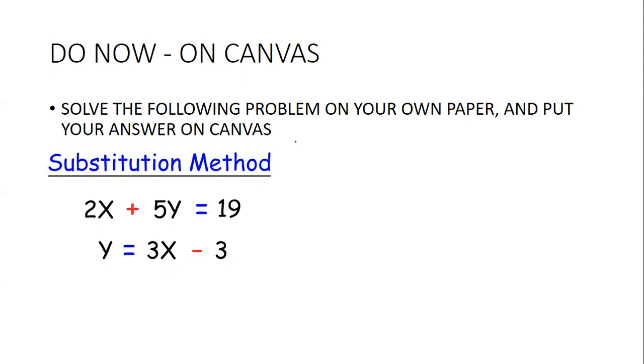So step one of substitution is to choose the equation that's either isolated or easy to isolate, right? And that would be this one. It's already by itself. So we already have step one done for us. Y equals 3x minus 3.